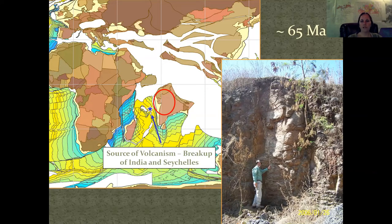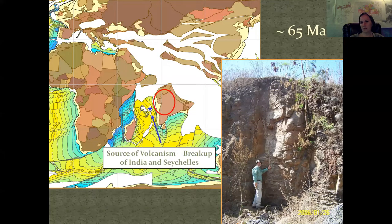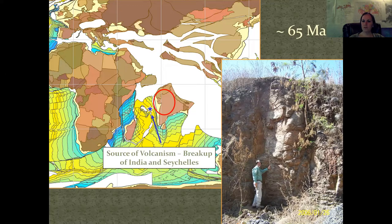This is a paleogeographic representation of what India looked like at about 65 million years ago — when the Deccan was erupting and the dinosaurs were roaming around. India is on its own by now, and the circle marks the approximation of where the Deccan Traps are found today. The volcanism is associated with the breakup of India and the Seychelles. On the right you can see my advisor, Joe Hartman, standing in front of one of the bigger flows we found in the Nagpur area — he's about six feet tall, so you can see the scale of these flows.